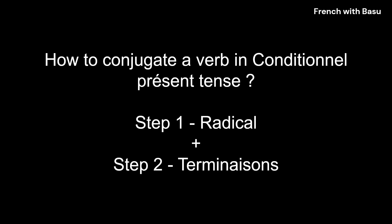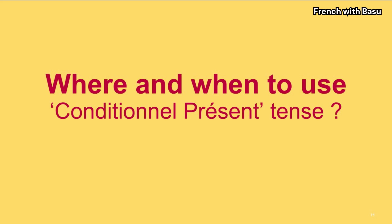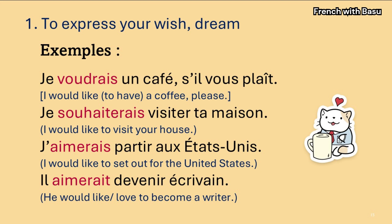Now you know how to conjugate any verb in conditionnel présent. Now we have to learn where and when to use it. Firstly, when you want to express a wish, dream, etc. For example: Je voudrais un café, s'il vous plaît. Je souhaiterais visiter ta maison. J'aimerais partir aux États-Unis. Il aimerait devenir écrivain.